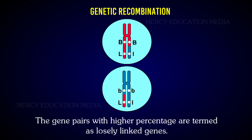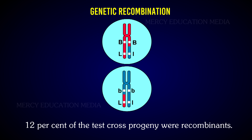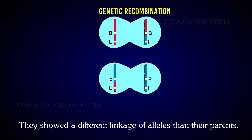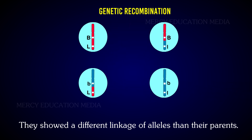The gene pairs with a higher percentage are termed as loosely linked genes. For example, 12% of the test cross progeny were recombinants, and they showed a different linkage of alleles than their parents.